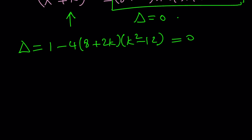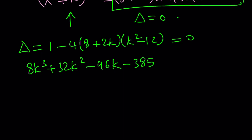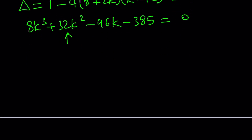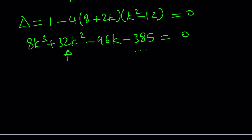If you set the discriminant equal to zero, you get a cubic equation: 8k cubed plus 32k squared minus 96k minus 385, which comes from 4 times 8 times 12 plus 1 equals 0. Good luck solving this cubic — you can try to eliminate k squared and use the cubic formula. I'll leave that as an exercise.